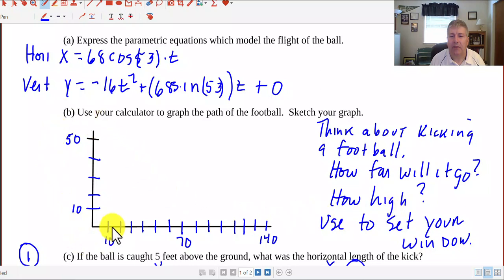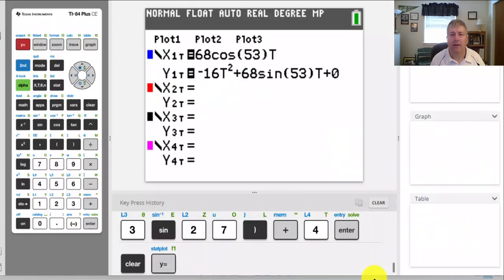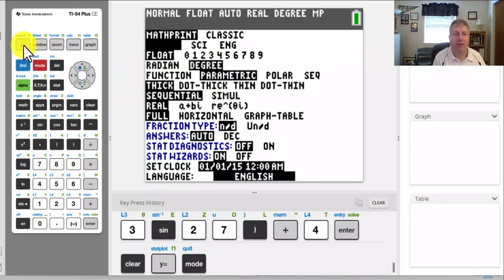So I did take the liberty of setting some things on our graph. If you kick a football about 50 feet high, that's going to be pretty high. And if you kick it 50 yards, that's going to be about 150 feet - that's a pretty long way. Let's start with that and head over to our calculator and get things underway. I went ahead and set my calculator to parametric mode and degree mode.